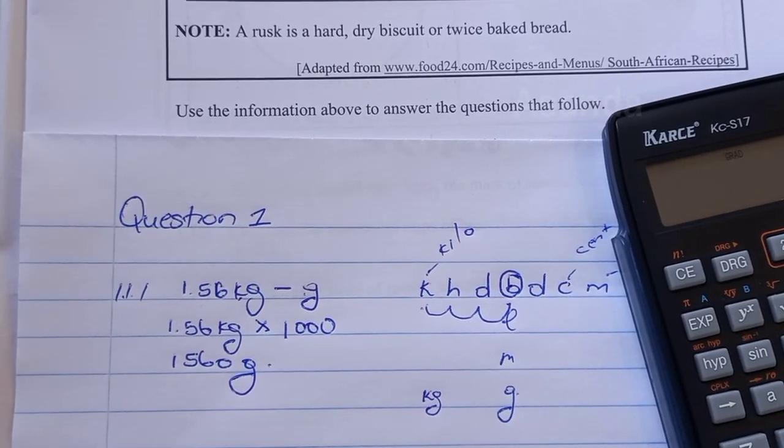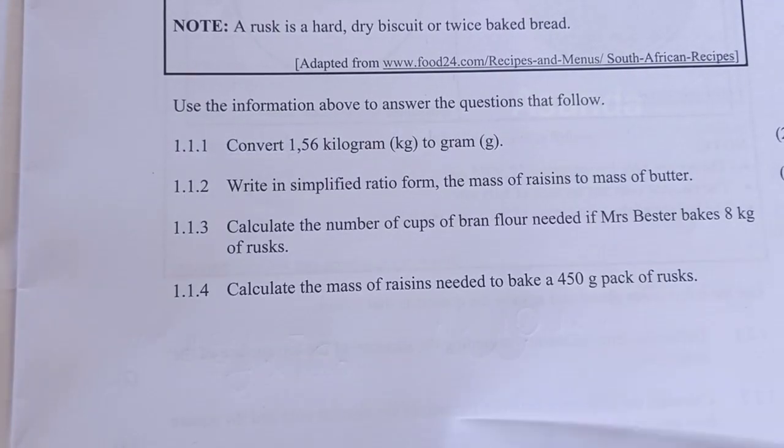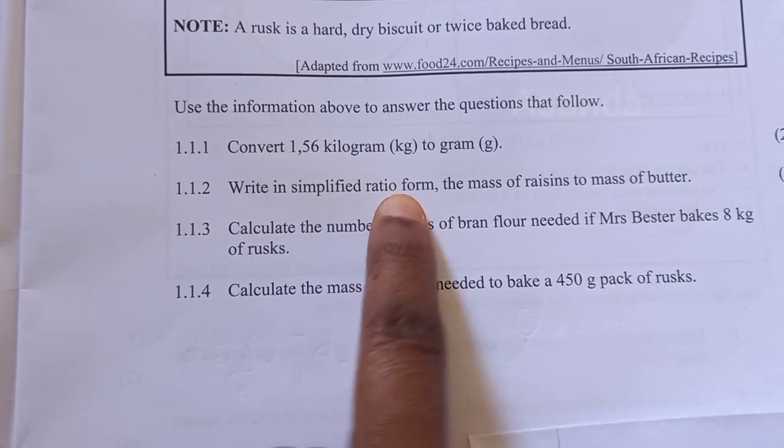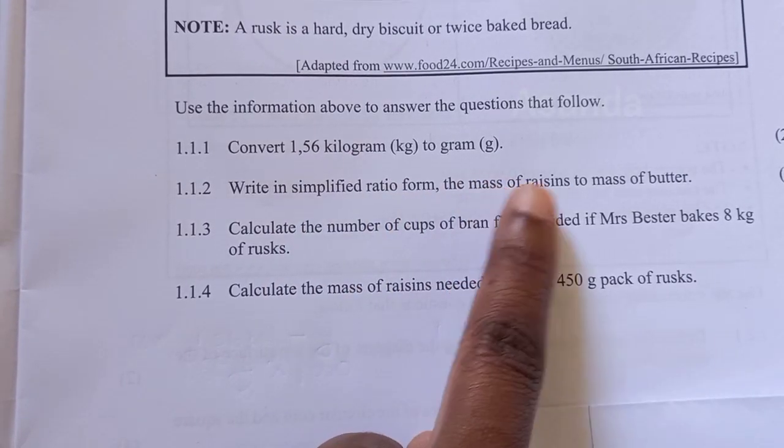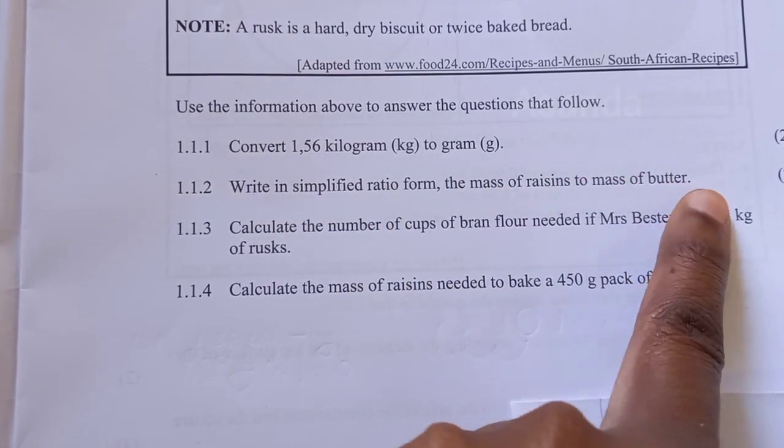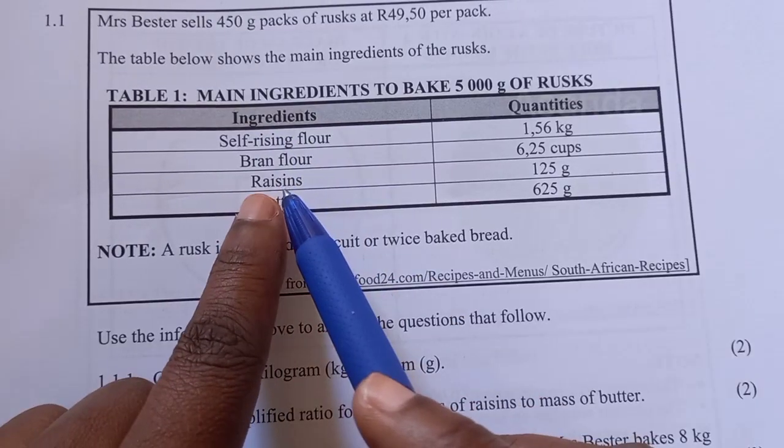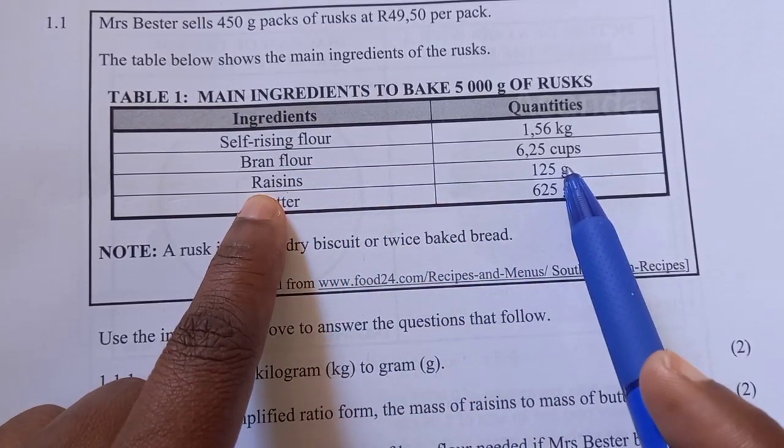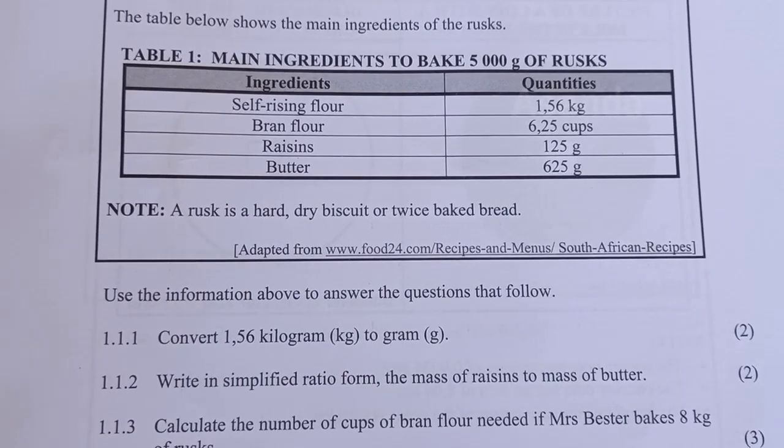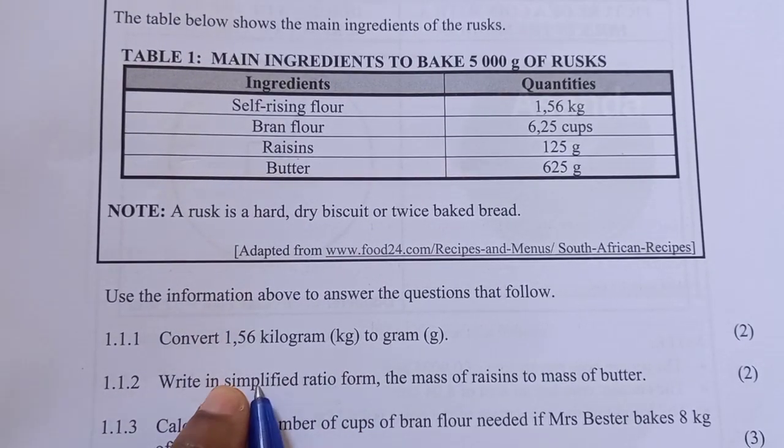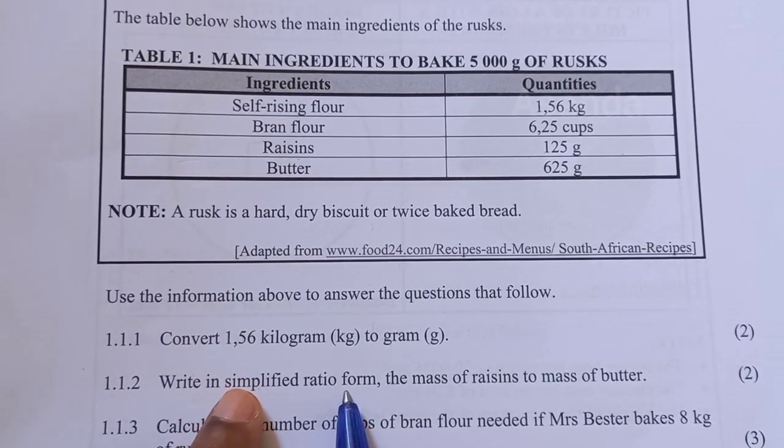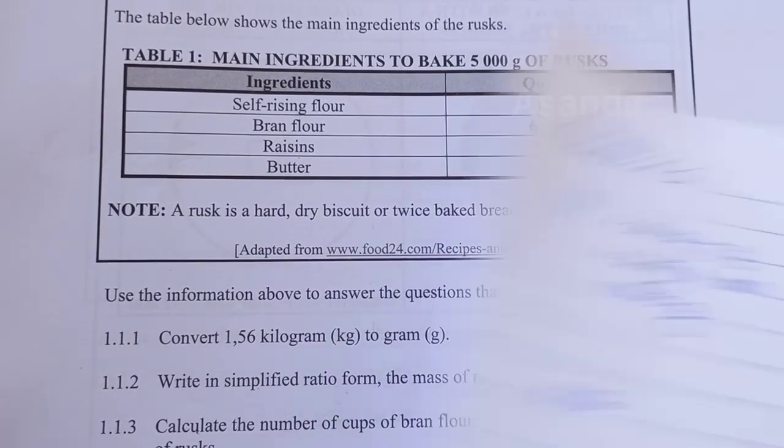Then we go to 1.1.2. Write in simplified ratio form the mass of raisins to mass of butter. They said we must write a ratio and then simplify it. Remember, it's going to be a simplified ratio, but first we have to write the ratio as it is.